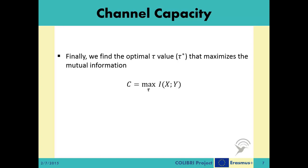In a binary channel, this optimization problem can be easily solved by an exhaustive search, which yields the maximum mutual information, hence the channel capacity.